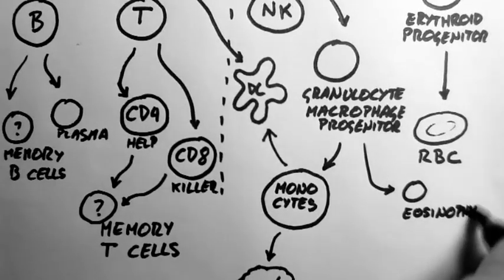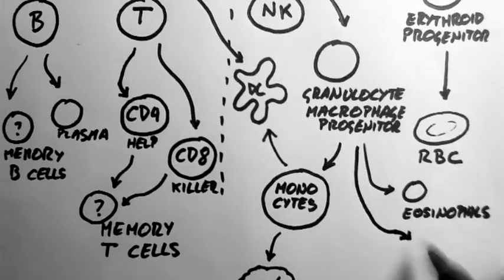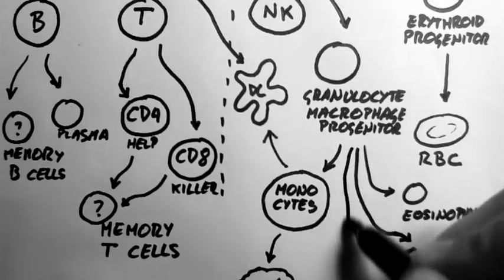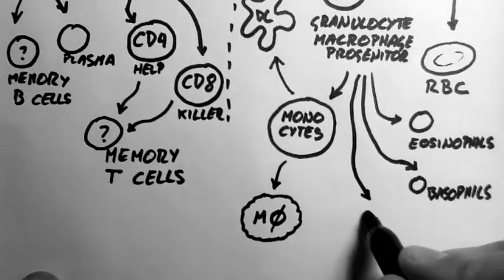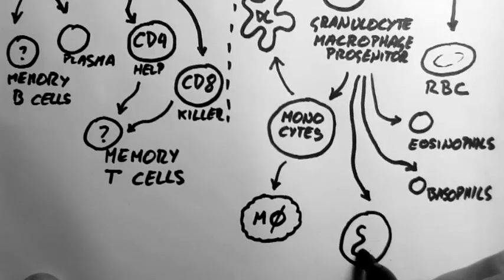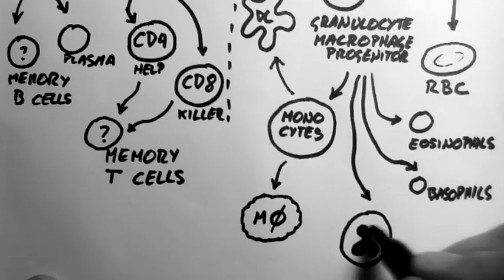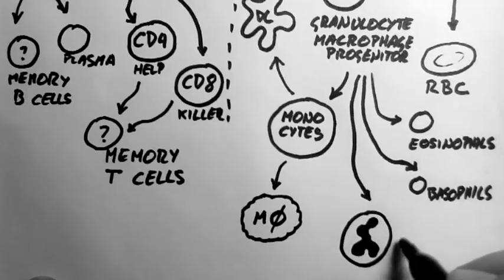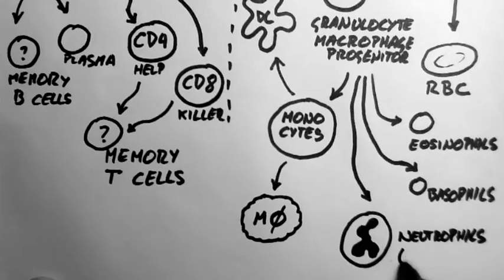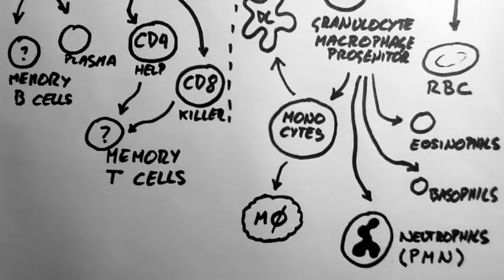They can also form a type of cell called eosinophils and another called basophils. And another very important one called a neutrophil, or a polymorphonucleosite, which is often abbreviated PMN. And these are very important in the acute stage of certain infections.